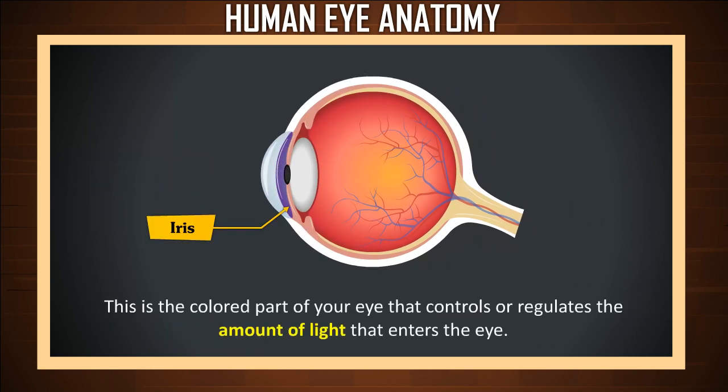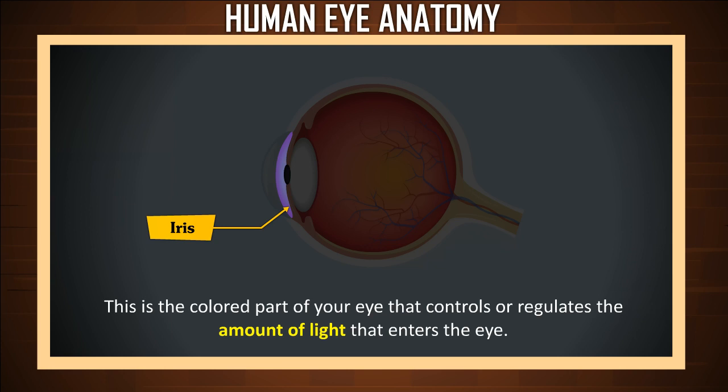Iris. The iris is the colored part of your eye that controls or regulates the amount of light that enters the eye.